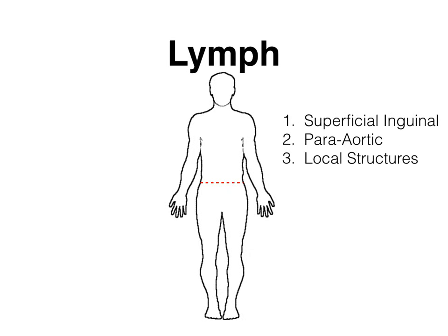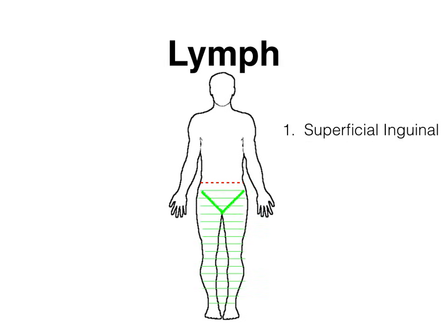The first thing we're going to talk about is the superficial inguinal nodes. I've drawn in a red dotted line, and what I want you to think about is that that red dotted line crosses over the umbilicus, or the belly button. Everything south of that red dotted line will for the most part drain to the superficial inguinal lymph nodes, which are found along the distribution of the thick green lines drawn on this body.